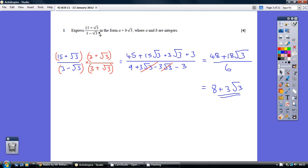How do we undo the denominator? We have to multiply top and bottom by the denominator, but with a change of sign.